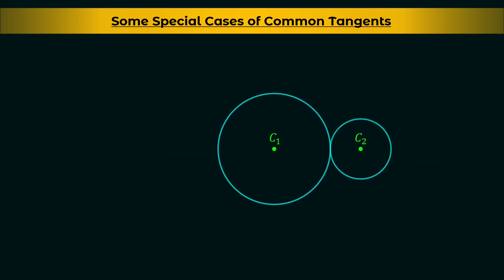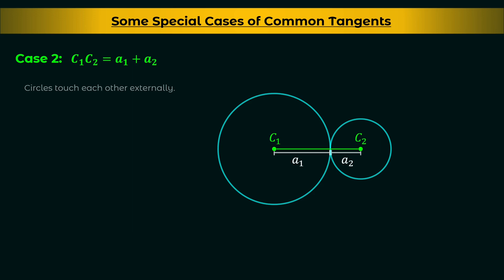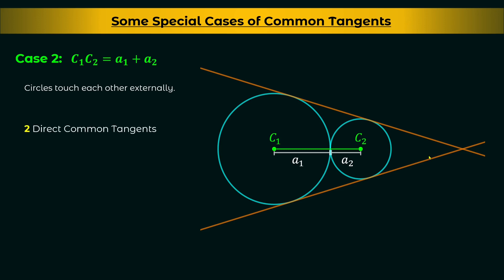In case two, C1C2 = A1 + A2 — the distance between the centers is equal to the sum of the radii. In this case the circles touch each other externally, meaning they intersect at only one point and the second circle is outside the first circle. You can draw two direct common tangents; however, you can only draw one transverse common tangent, or in other words the transverse common tangents are coincident.